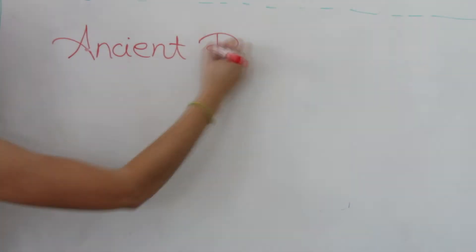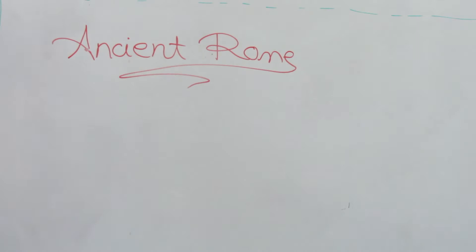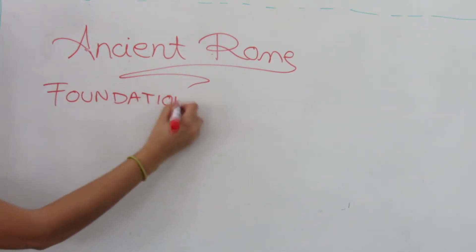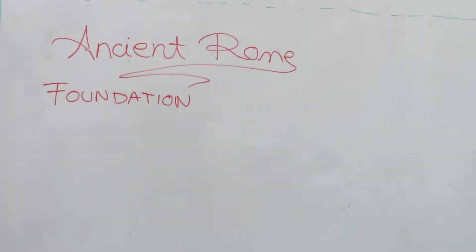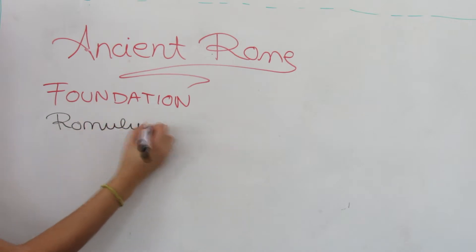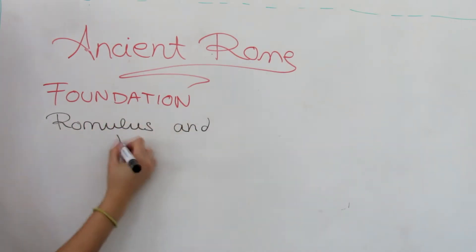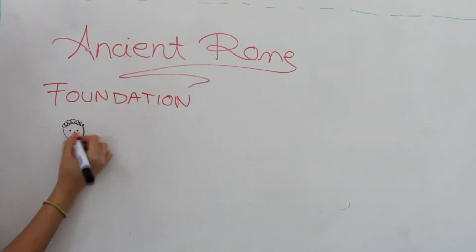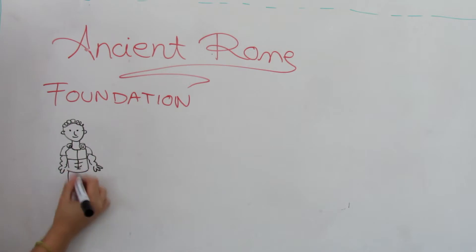Let's start from the beginning. Ancient Rome. According to the founding myth of Rome, the city was founded in 753 BC by twin brothers Romulus and Remus, who were grandsons of the Latin king Numitor of Alba Longa.